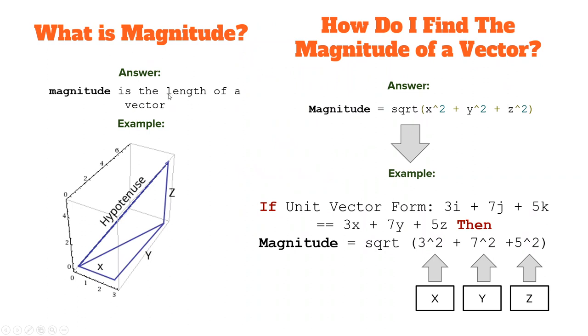So what is magnitude? Magnitude is the length of a vector. So our hypotenuse here, this one line is a vector. How do I find the magnitude? Magnitude is equal to the square root of x squared plus y squared plus z squared.